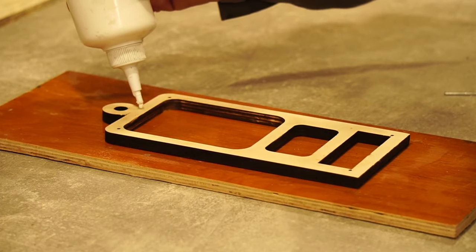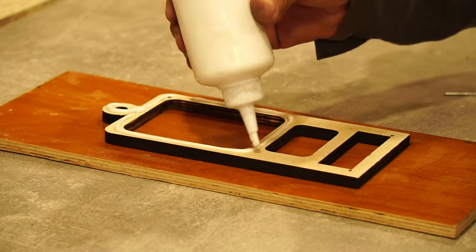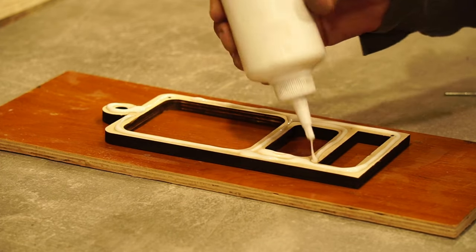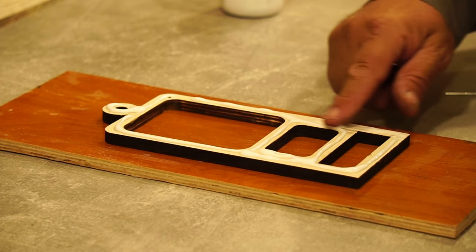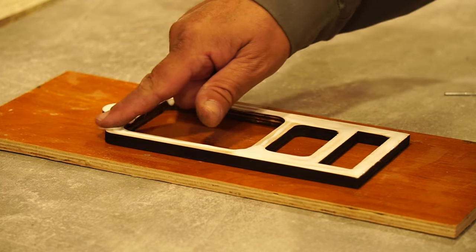I glue the elements following the sequence. I also put 4 studs in the specially made holes. They serve to align the elements with each other. I use wood glue, which turns clear once it dries.